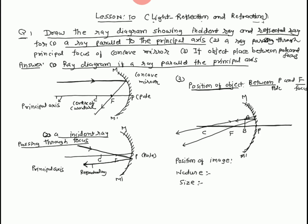In the third diagram, they cannot meet in front of the mirror. By extending back side, they intersect at A dash — there is A dash B dash. This is the image, from behind the mirror. The position of image: the A dash B dash image is formed from behind the mirror.